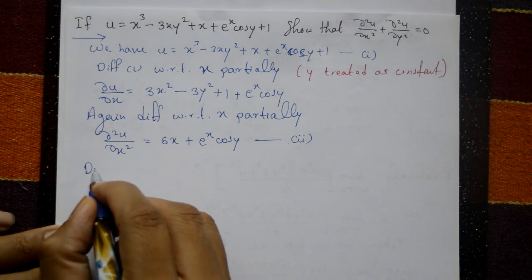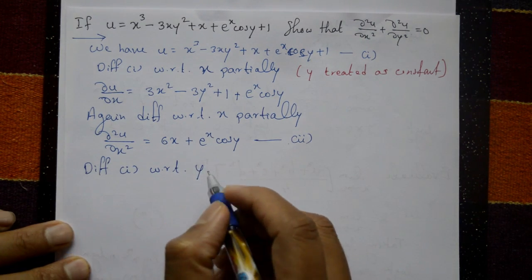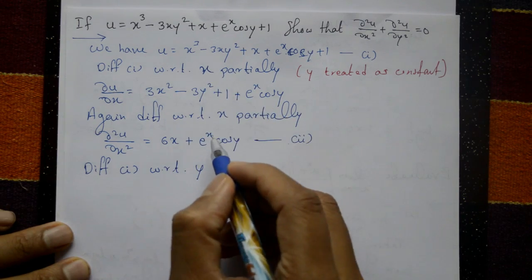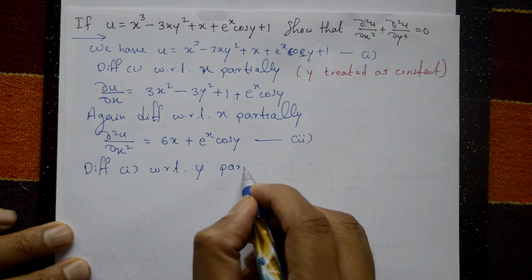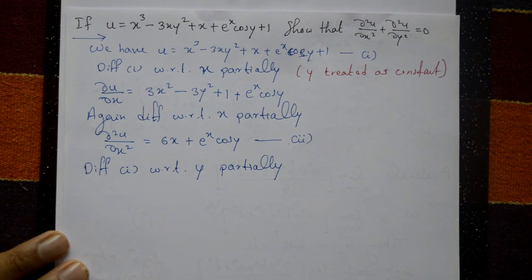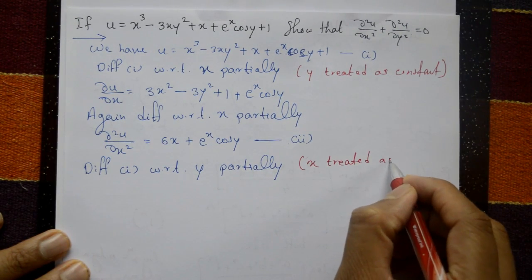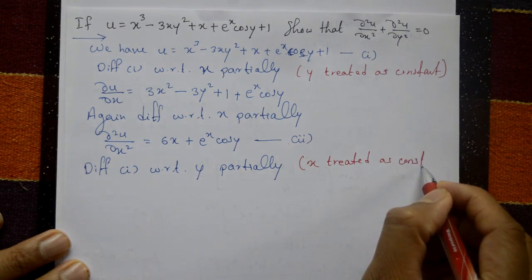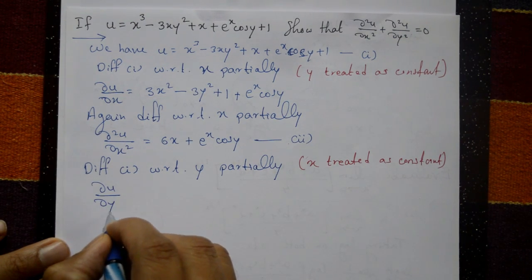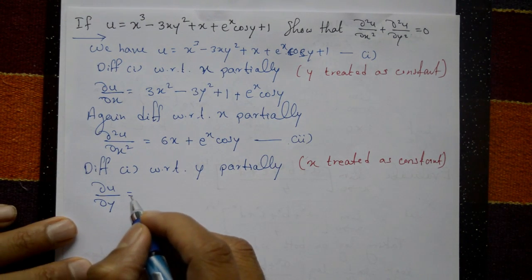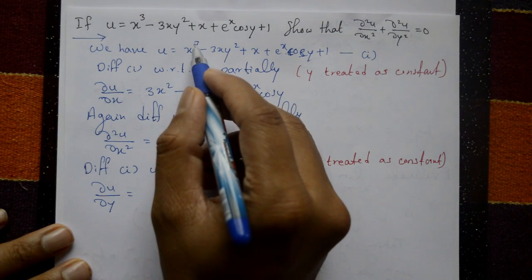Now go back to equation number 1 and differentiate with respect to y. We require ∂²u/∂y², so partially differentiate with respect to y, x treated as a constant. ∂u/∂y: x cube term gives 0, and differentiating 3xy² gives minus 6xy.